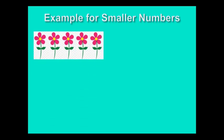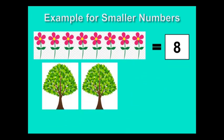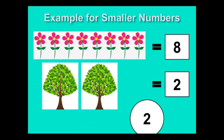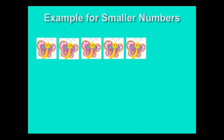1, 2, 3, 4, 5, 6, 7, 8. There are 8 flowers. 1, 2, 3, 4, 5. There are 5 butterflies.